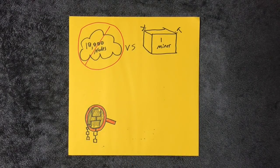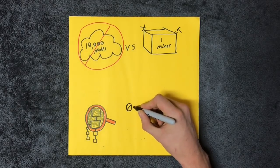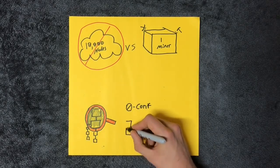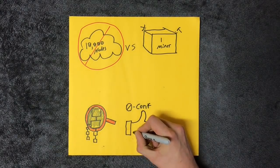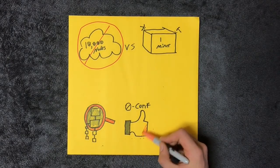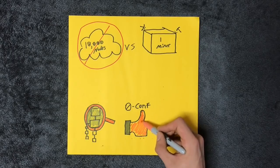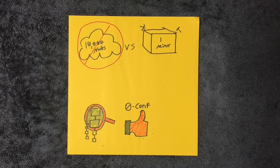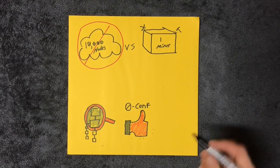It allows you to independently verify zero confirmation instant transactions. If there was a situation where the miners colluded into a 51% attack or double spend, it would allow you to see it, but you still couldn't do anything about it. This makes it useful for businesses accepting Bitcoin to run these nodes, not users.